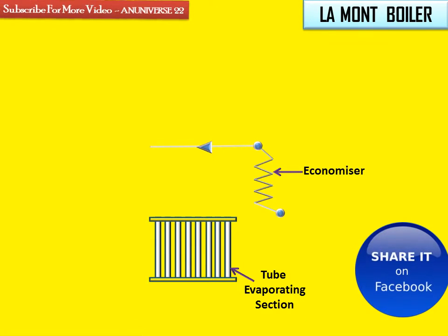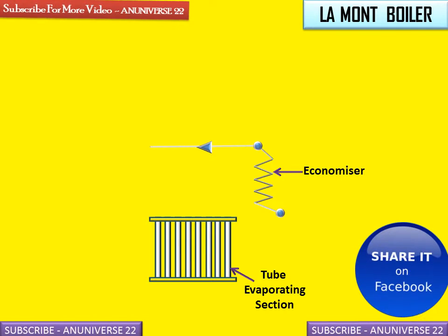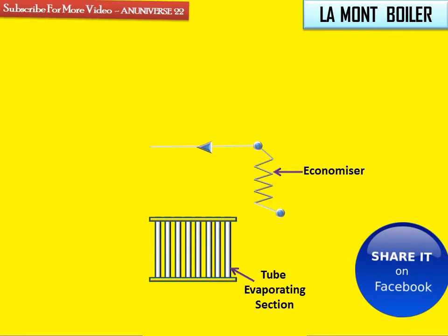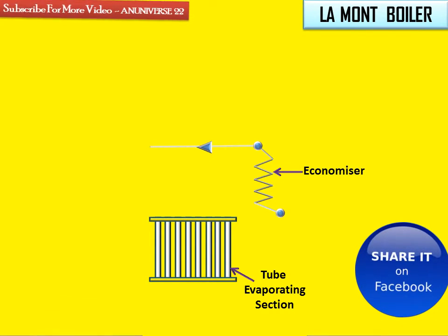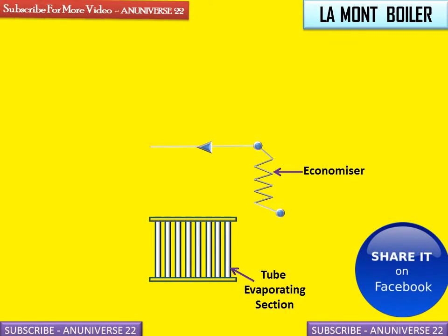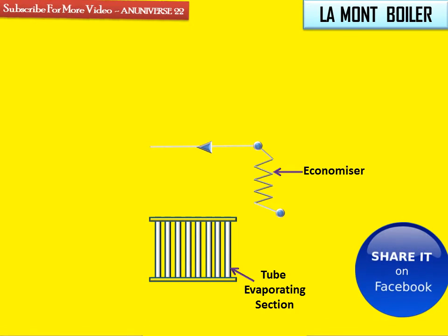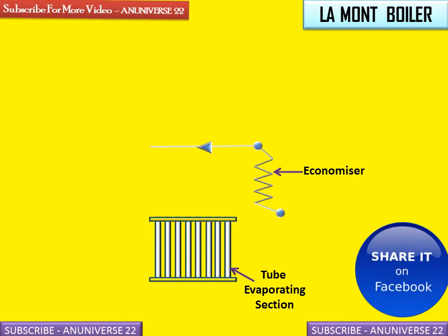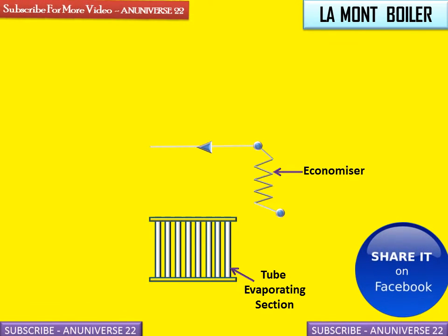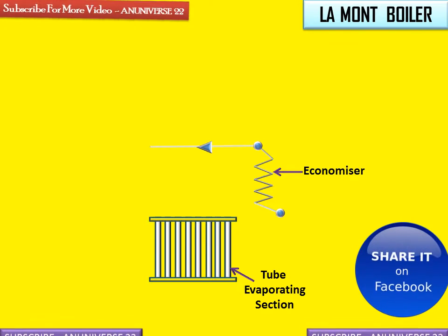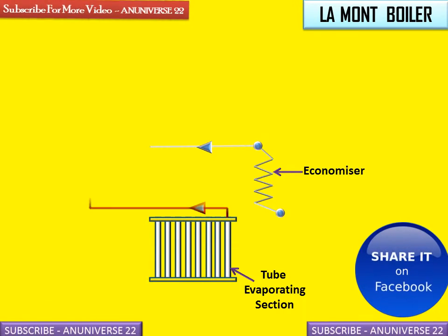This is the economizer. The economizer is used to preheat the water by using the remaining heat of the combustion flue gases, and it increases the boiler efficiency. The feed water is first supplied to the economizer before entering the boiler.